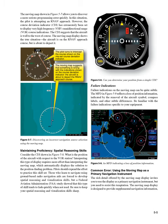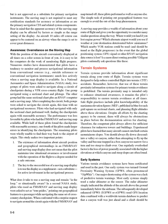The moving map display is designed to provide supplemental navigation information, but is not approved as a substitute for primary navigation instruments. The moving map is not required to meet any certification standards for accuracy as other primary navigation CDI and related system components. Bear in mind that the apparent accuracy of the moving map display can be affected by factors as simple as the range setting. An aircraft 10 miles off course can appear to be centered on an airway when the range is set to cover great distances. With the position of the aircraft conveniently displayed at all times on a color screen, it is easy to let the computers do the work of monitoring flight progress.